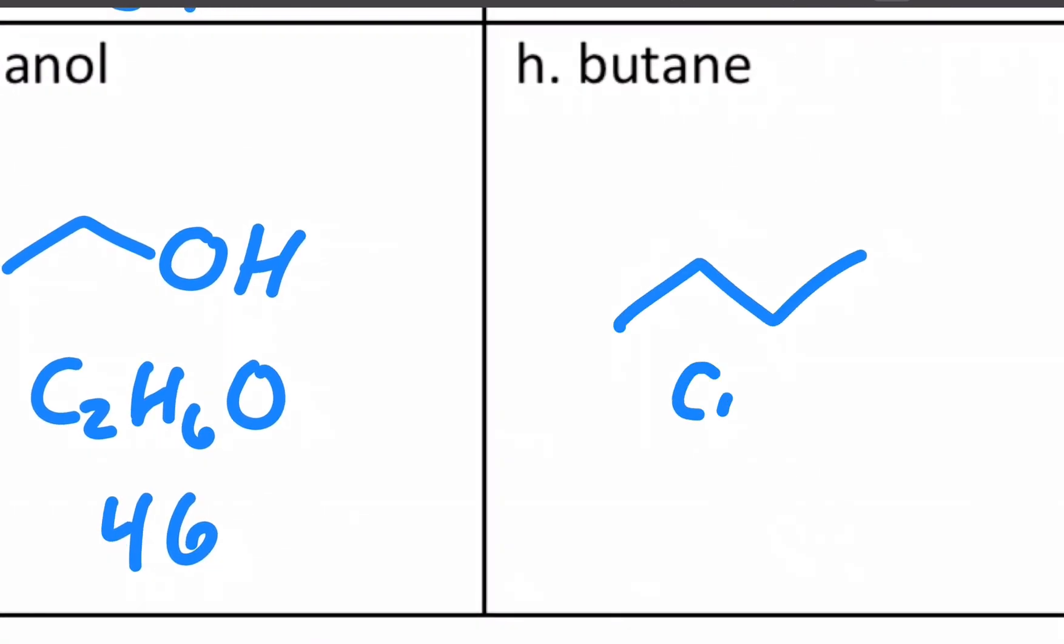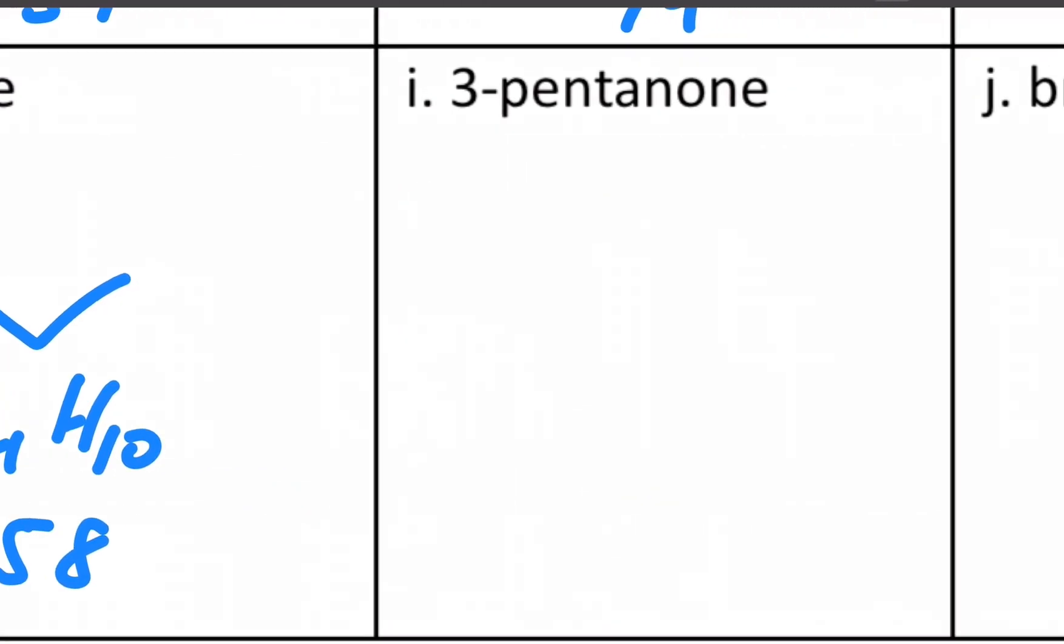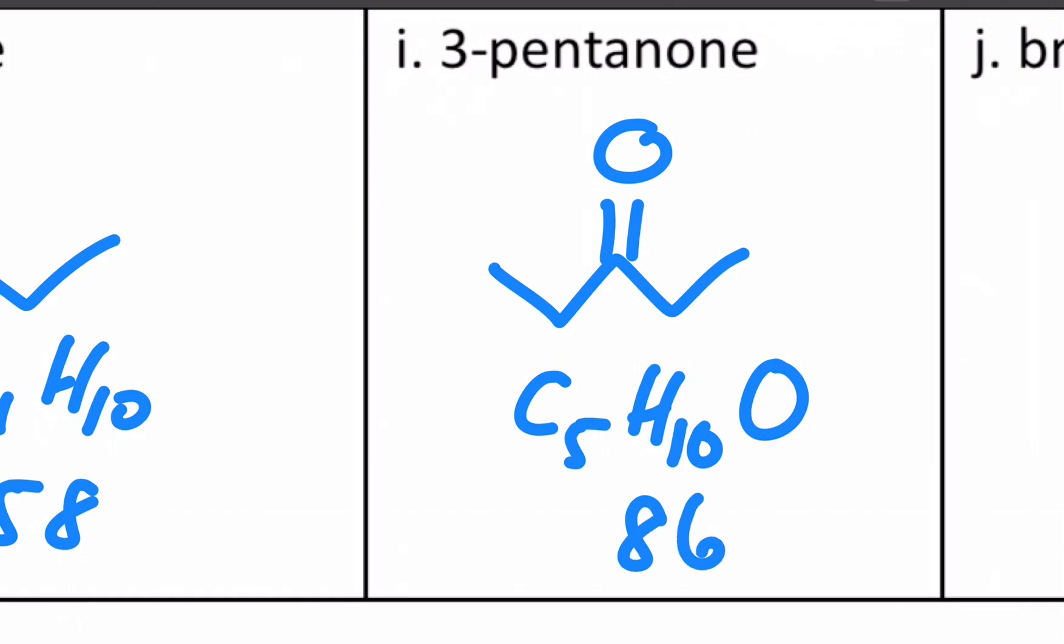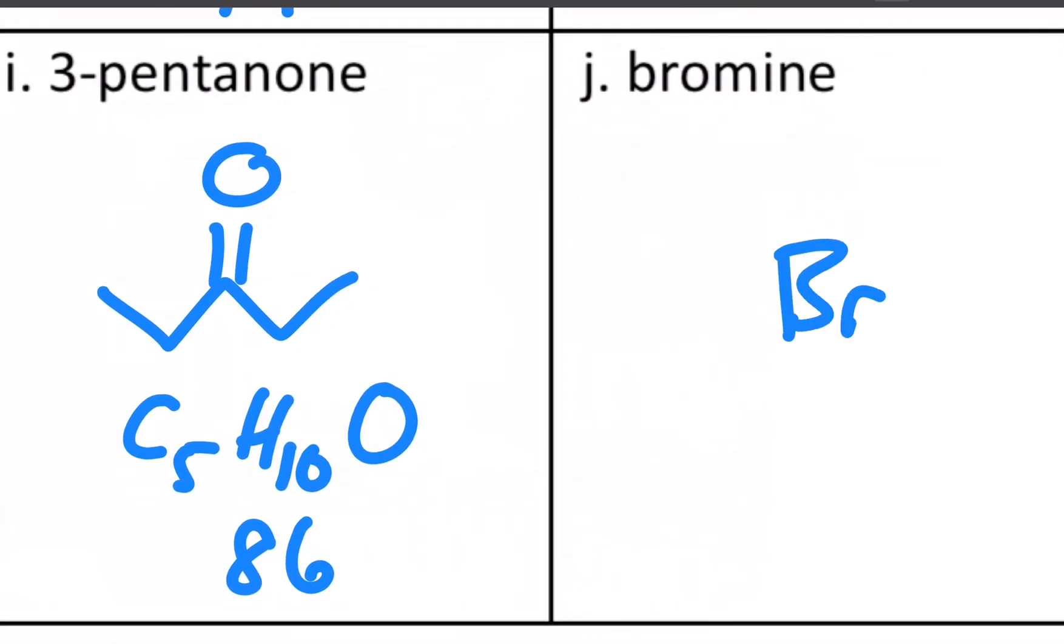Butane, C4H10, weighs 58. 3-pentanone, that's a five carbon ketone with a ketone right in the middle. That gives me C5H10O, that should add up to 86. And then bromine, another diatomic, weighs about 160.